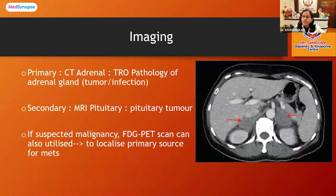Once adrenal insufficiency is confirmed, we look for the causes of primary disease by performing a CT adrenal scan to identify any tumor, infection, or hemorrhage. In cases of infection or malignancy, calcification and central necrosis of the adrenal gland may be seen. In cases of metastasis, an FDG PET scan should be done to look for the primary source.